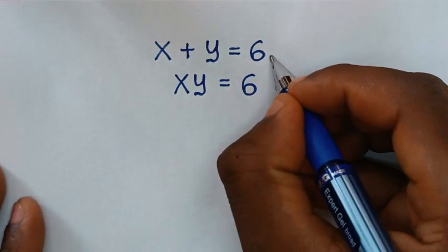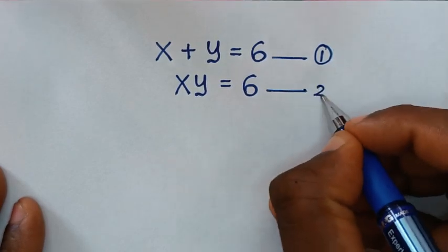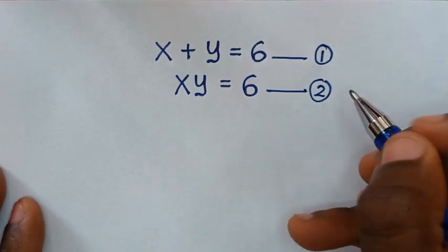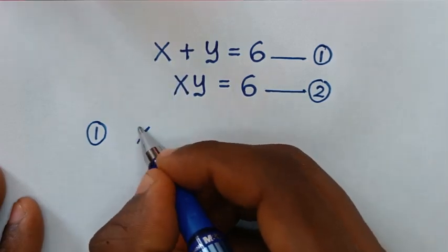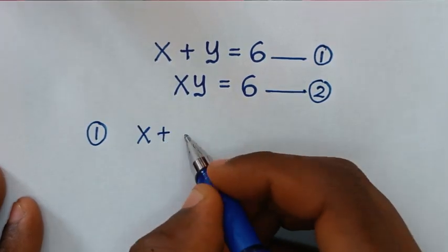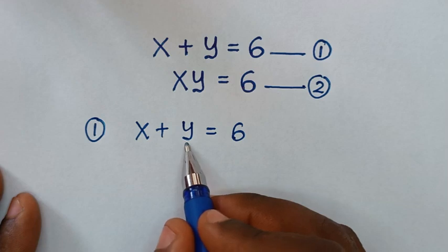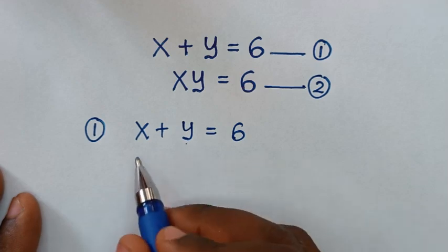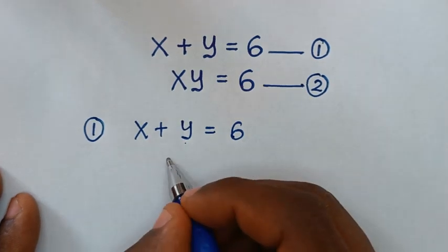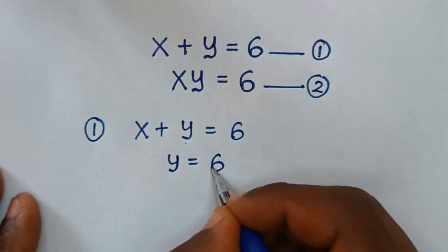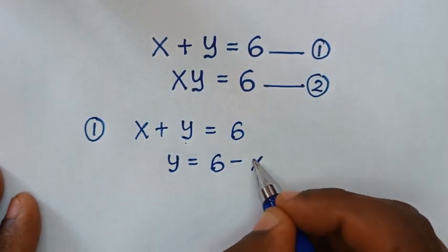We'll start by letting x plus y equals 6 as equation 1, and xy equals 6 as equation 2. From equation 1, we'll make y the subject. Taking x to the right side gives us y is equal to 6 minus x.